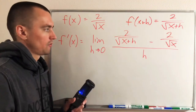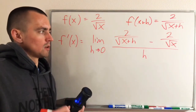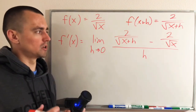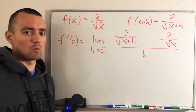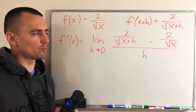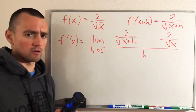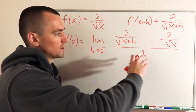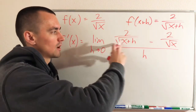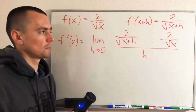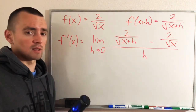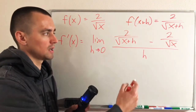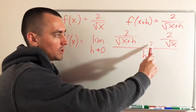So now we have something that we can actually work with. Now we're going to go through the typical process of how you would manipulate this limit whenever you have a function that has square roots in it. This is going to be a pretty common pattern that you're going to see. Notice based on the formula, we're always going to end up with some sort of square root thing minus some sort of square root thing. And whenever you have something like that, the easiest thing to do is multiply the top and the bottom of this fraction by the same thing, but with a plus instead of a minus.